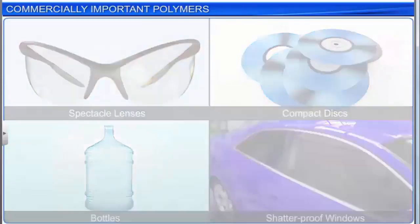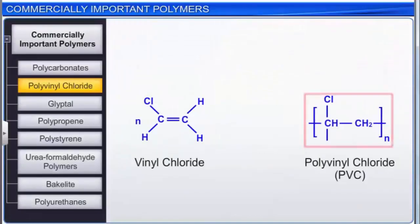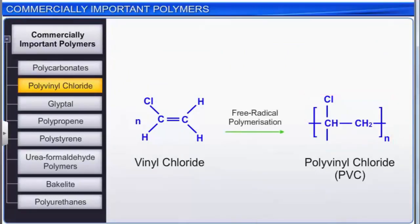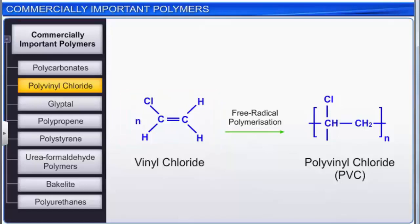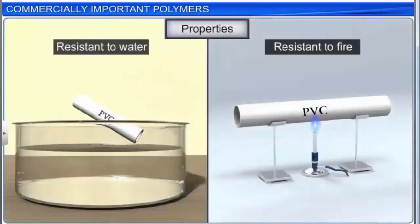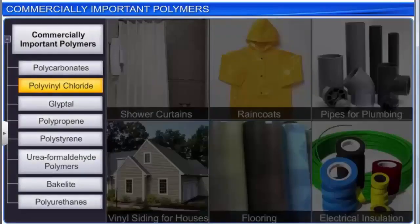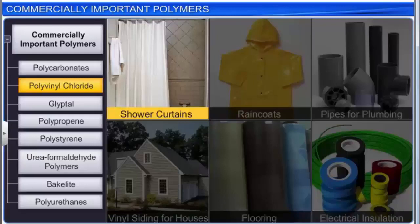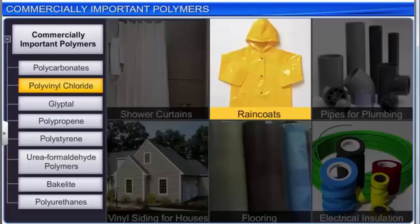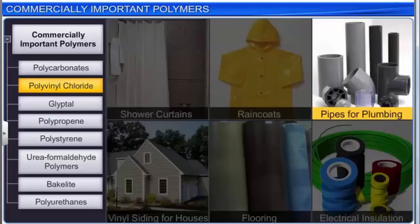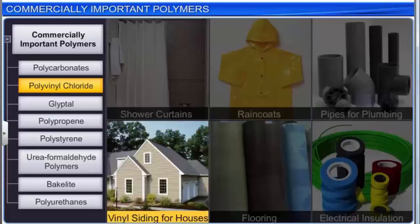Polyvinyl chloride (PVC) is obtained from the free radical polymerization of vinyl chloride. PVC is resistant to water and fire. It is used to make shower curtains, raincoats, pipes for plumbing, vinyl siding for houses, flooring, and electrical insulation.